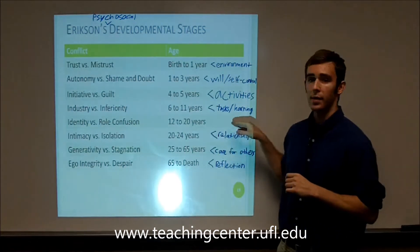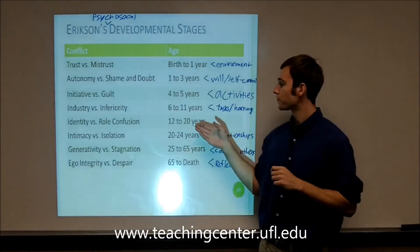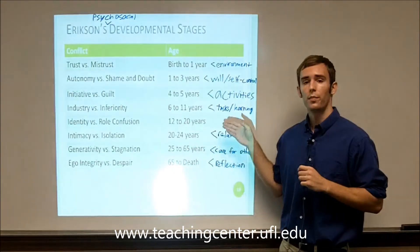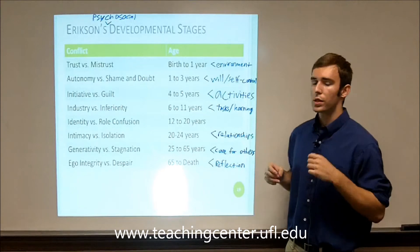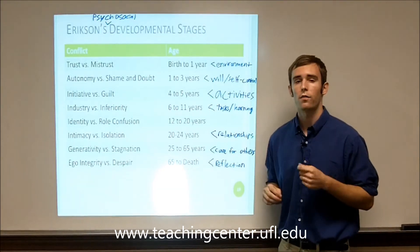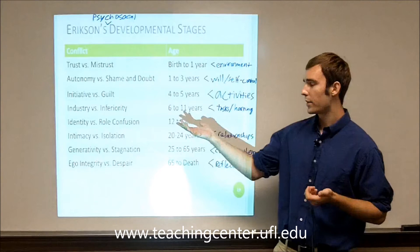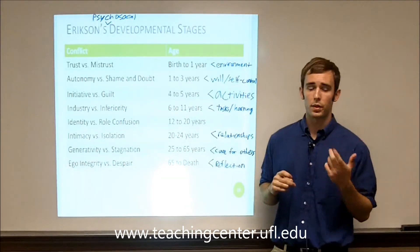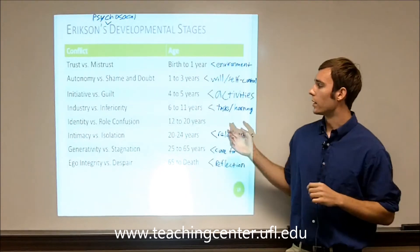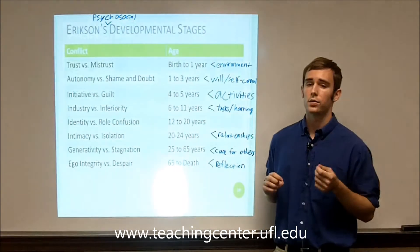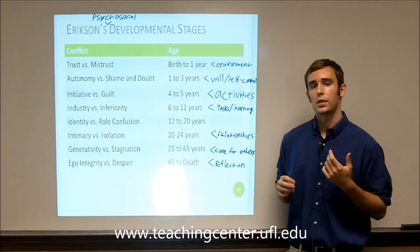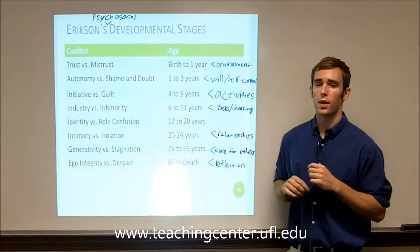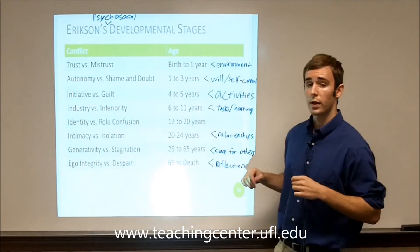The fifth stage is aptly named identity versus role confusion, occurring from adolescence through late teens up until 20 years of age. This is where the individual develops their sense of self — their identity, who they are as a person, what they believe in, what they like and don't like. If the individual doesn't develop a sense of what they want out of life, they experience role confusion and can become apathetic towards life.